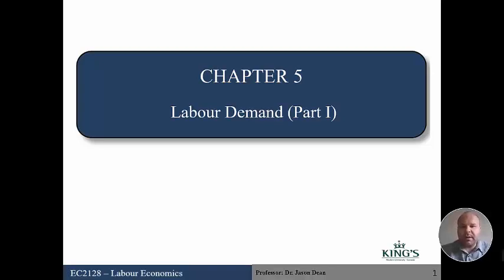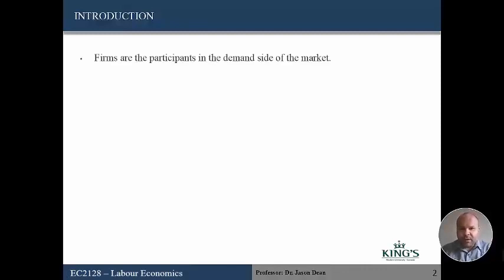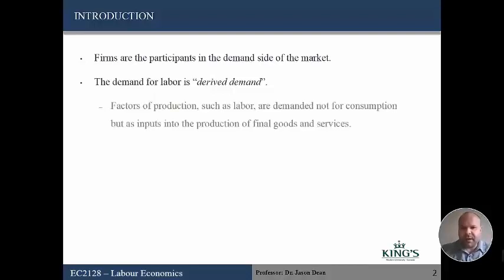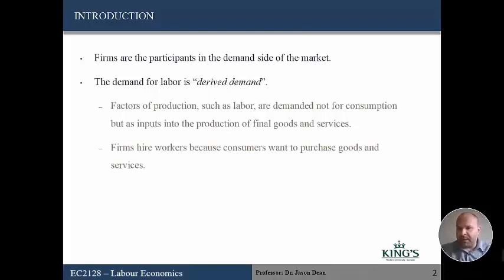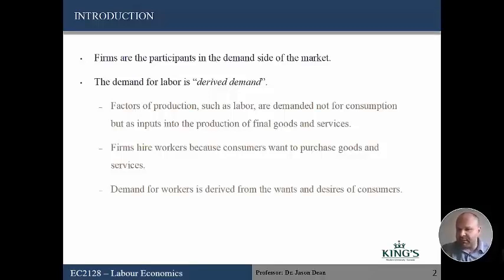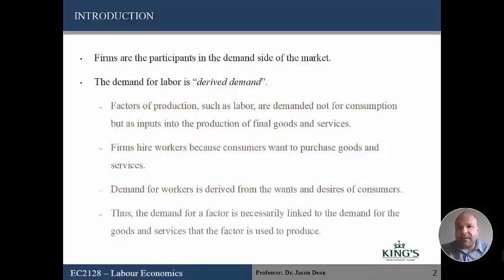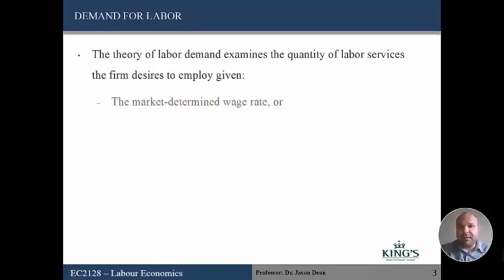Hello everyone and welcome to part one of our lecture on labor demand. We're going to switch over and look at the demand side of the market, where the participants are firms. The demand for labor is a derived demand because inputs used for production are not used for consumption — they're inputs into the production of final goods and services. Firms hire workers because consumers want to purchase goods and services, so the demand for workers is derived from the wants and desires of the consumer. The theory of labor demand examines the quantity of labor services the firm desires to employ given the market-determined wage.